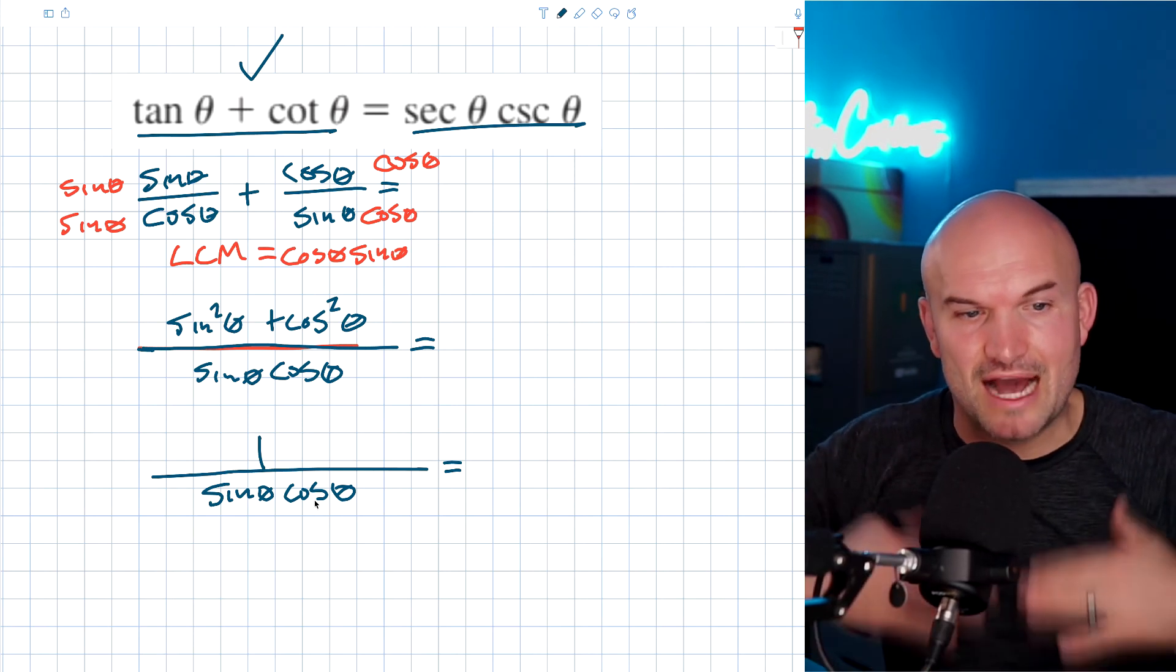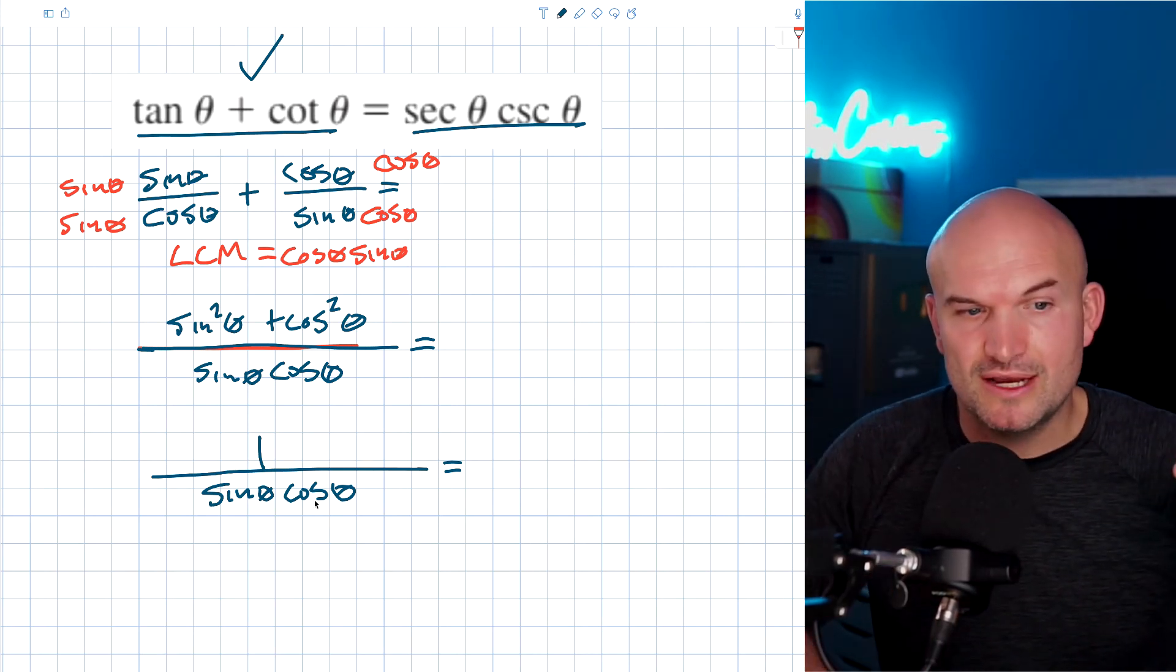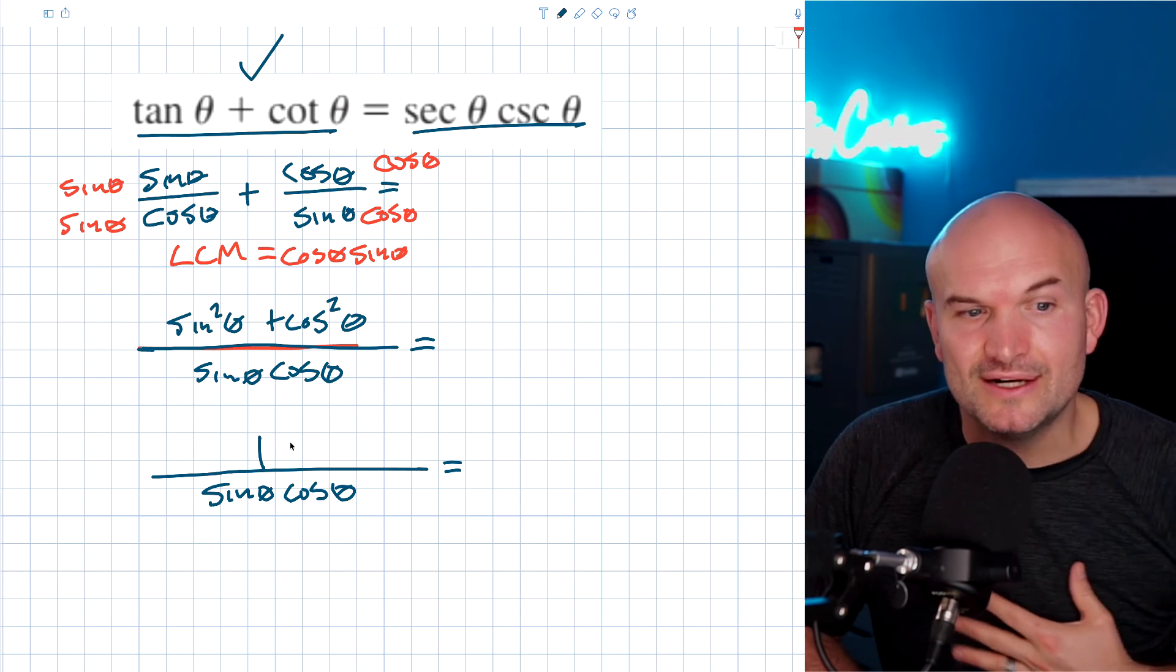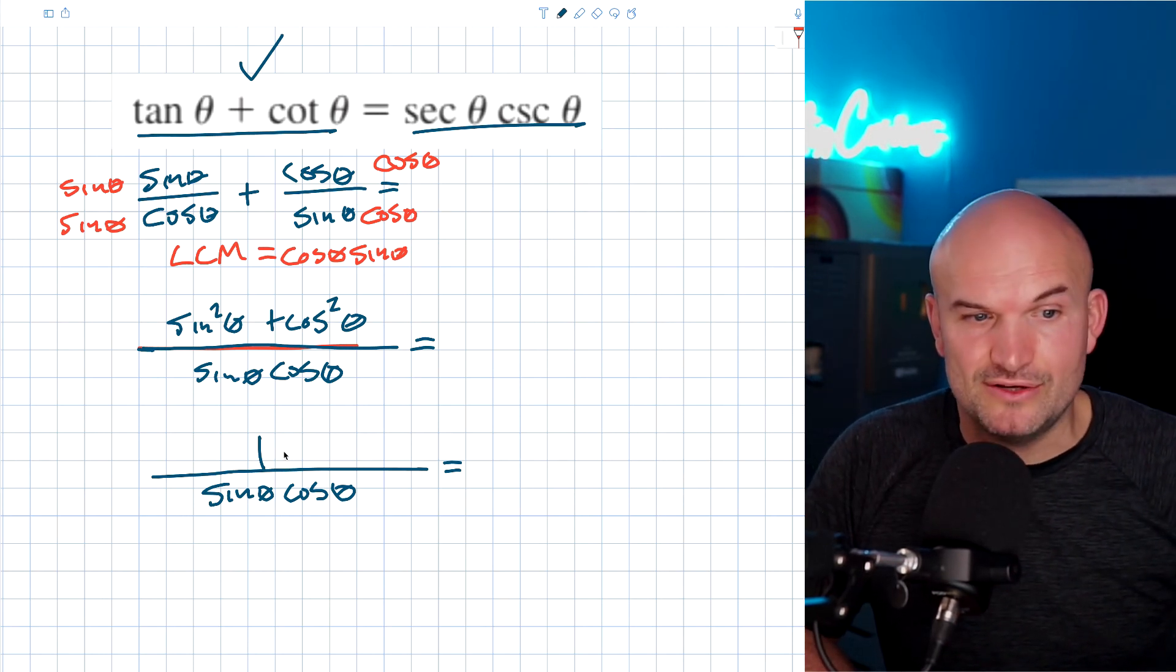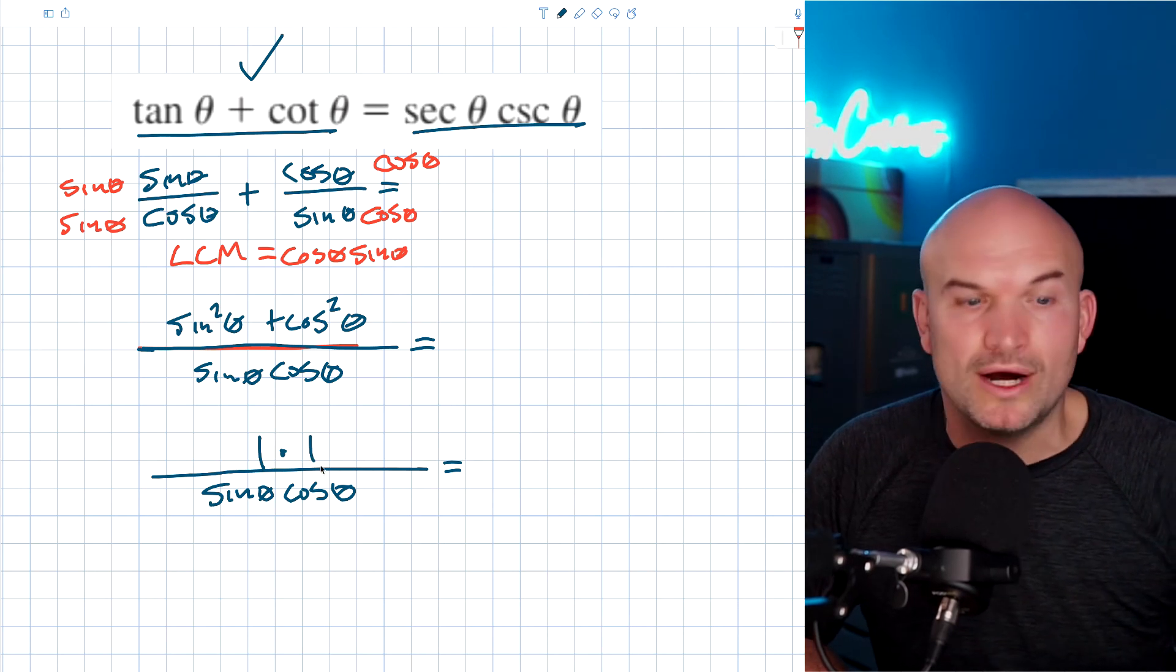So what I want to do here is if I can, how can I rewrite these as single functions? And hopefully you recognize here is you can use this as what we call the reciprocal identity. You could technically put a times one as well here.